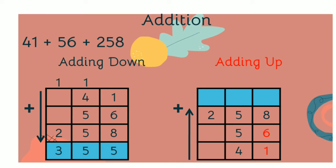Now check by adding up: 1 plus 6 is 7. 7 plus 8 is 15 — you put 5 and remind 1, put down. 1 plus 4 is 5. 5 plus 5 is 10. 10 plus 5 is 15 — you put 5 and then put 1. 1 plus 2 is 3, put 3 down. The answer is 355. Both answers are the same.